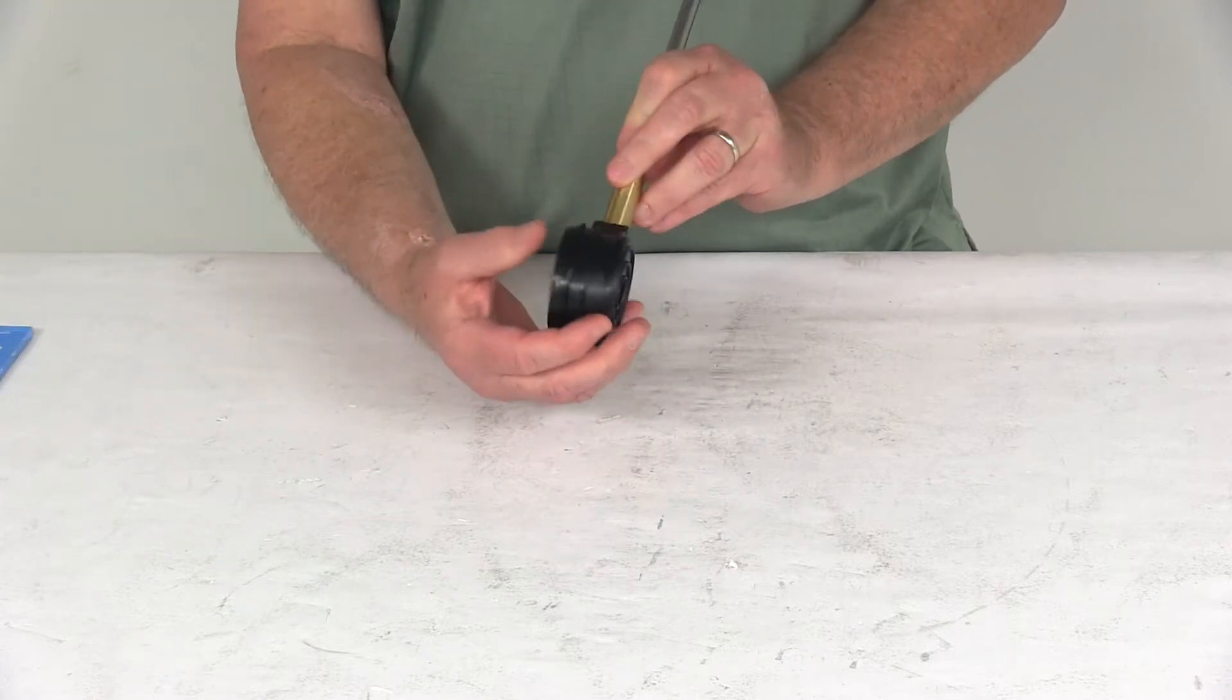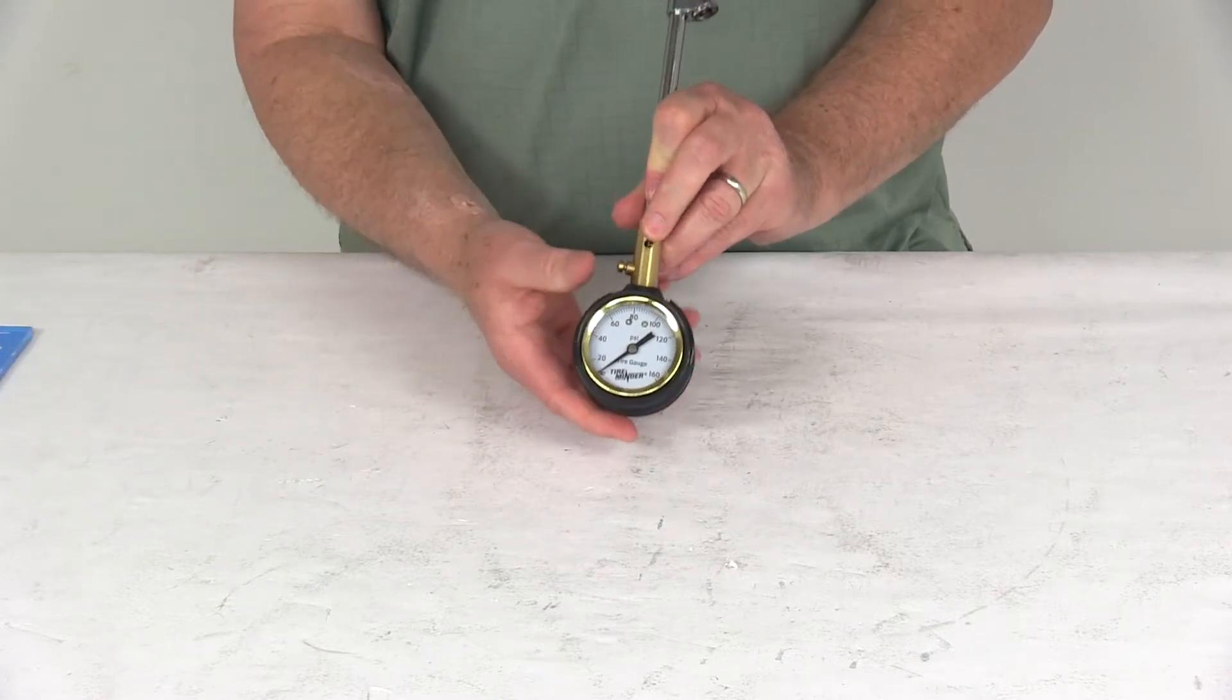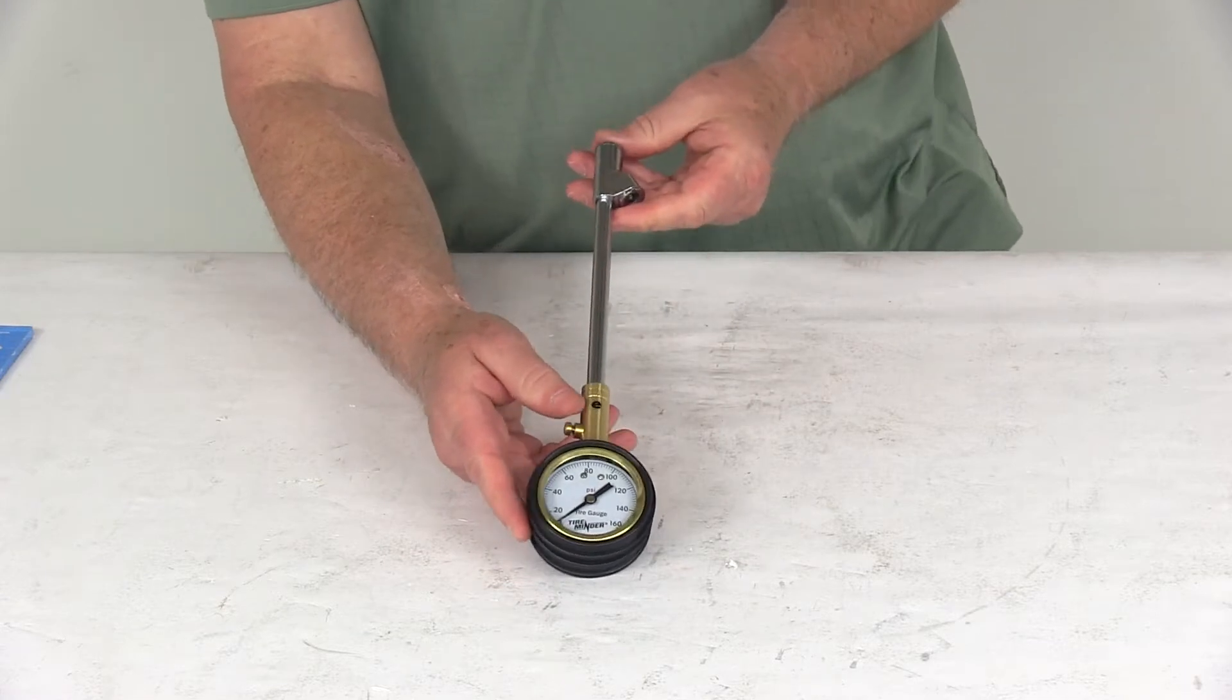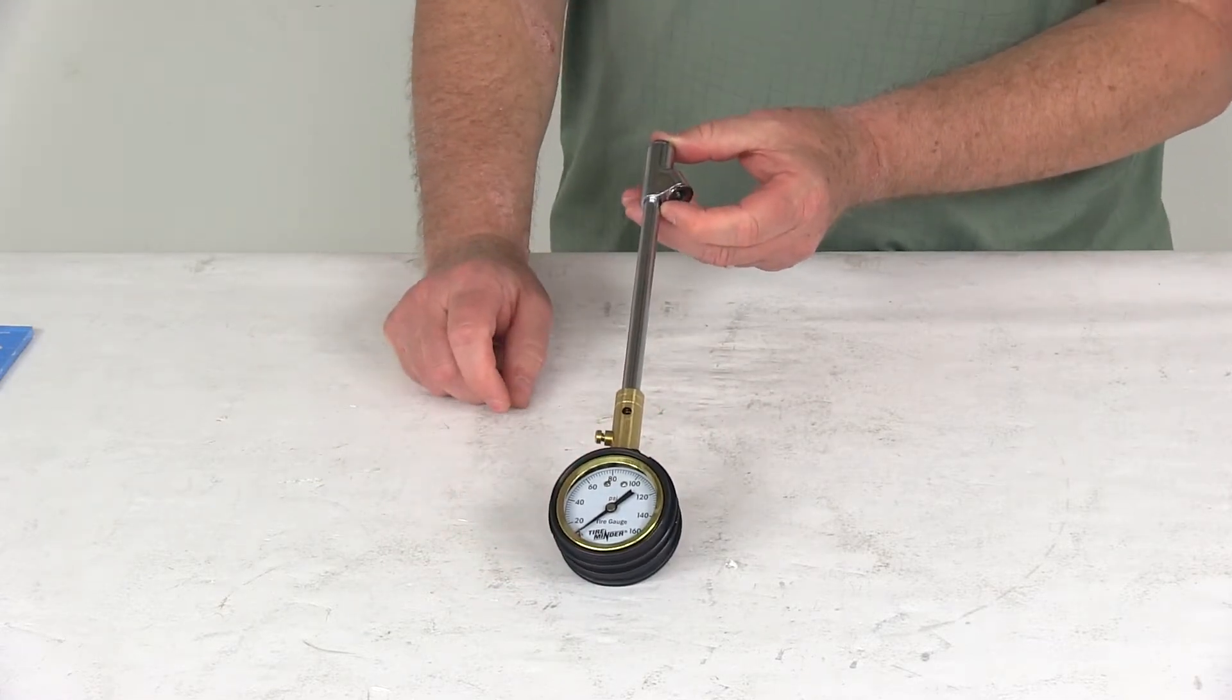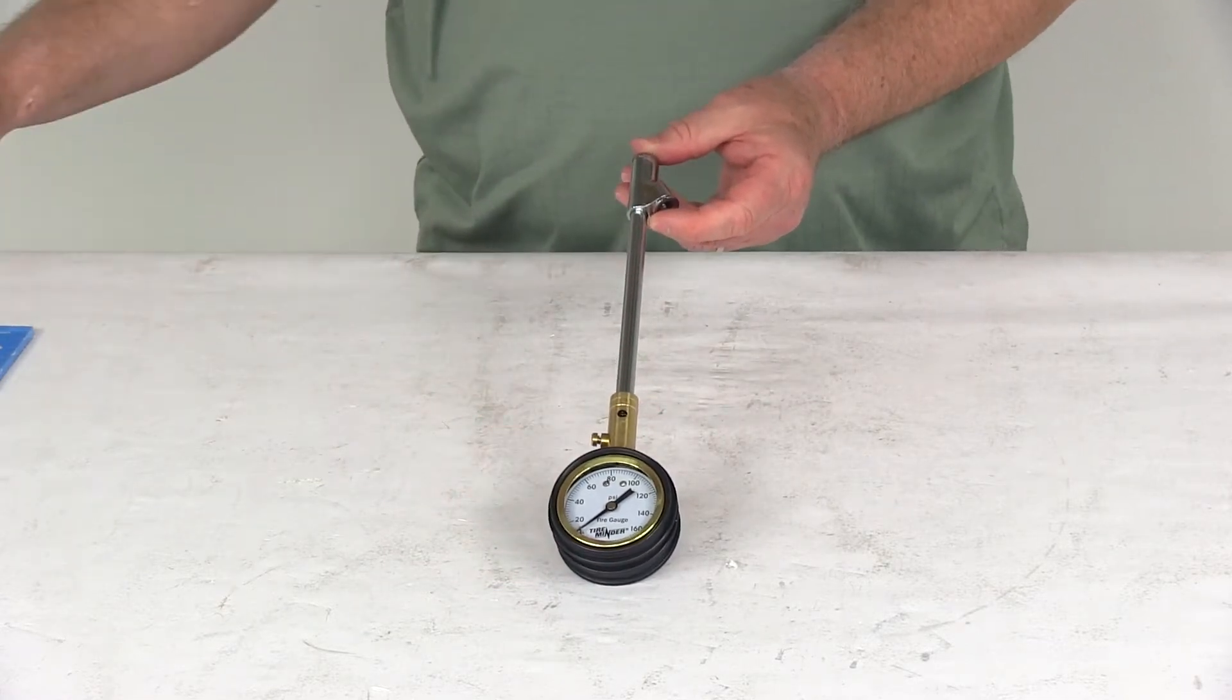If you notice over the dial gauge, they have a nice rubber protection on it. That should do it for the review on the TireMinder Mechanical Dial Gauge Dual Head Tire Pressure Gauge.